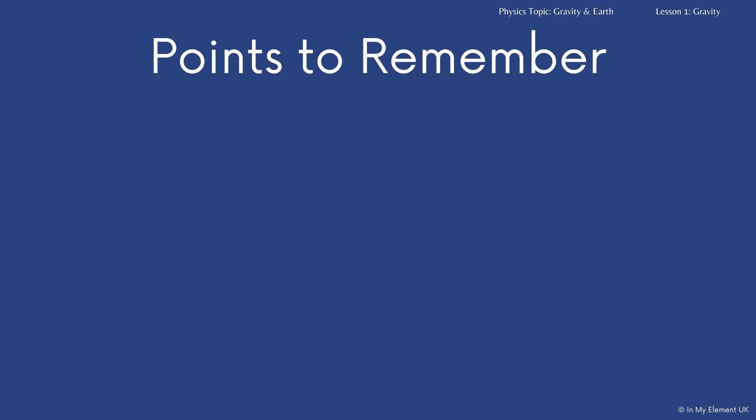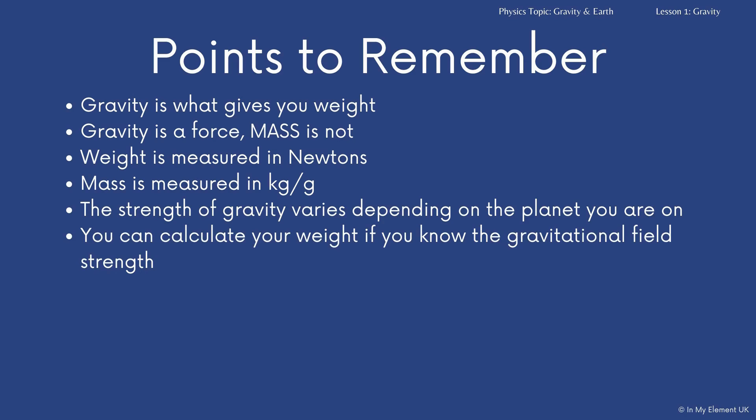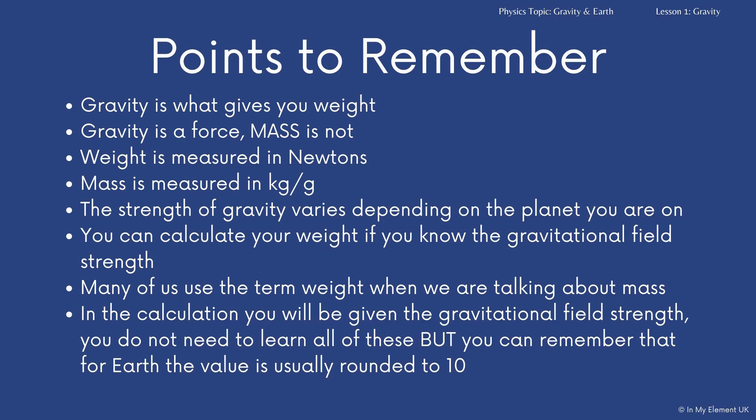Now there's quite a lot of information there. Here are some key points for you to look back on that you need to remember. Gravity is what gives you weight. Very important. Gravity is a force. Mass is not. Weight is measured in newtons. Mass is measured in kilograms or grams. The strength of gravity varies depending on the planet you are on. You can calculate your weight if you know the gravitational field strength because you can measure your mass. Many of us use the term weight when we're talking about mass, so be careful. And if you do the calculation, you should be given the gravitational field strength, but it's worth remembering that the Earth value is usually rounded to 10.